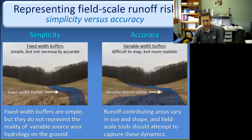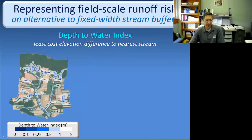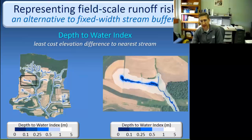There are wetness indices you can calculate based on topography using digital elevation models. We've experimented with that approach, as have others — you'll see that in Zach's presentation too. One approach we're taking is something called the depth of water index. It's defined as the least-cost elevation difference to the nearest stream. All you really need to know is that it tries to tell you, on average, how deep the water table is as you move away from the stream. Areas close to the stream are defined as zero because that's where groundwater intersects the stream, and the further you get away, the deeper you have to go to reach the regional water table.